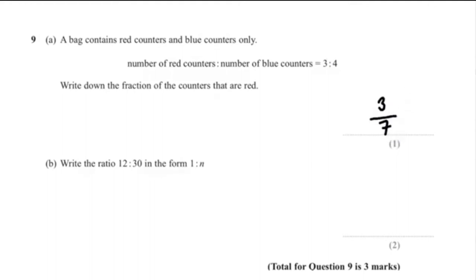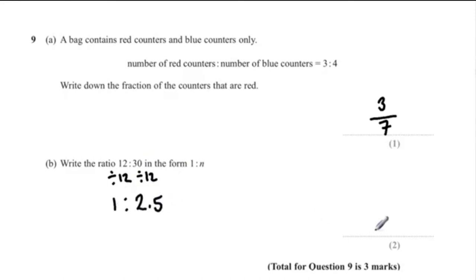Part B: write the ratio 12 to 30 in the form 1 to N. Divide both numbers by 12: 12 divided by 12 is 1, and 30 divided by 12 is 2.5. So our final answer is 1 to 2.5.